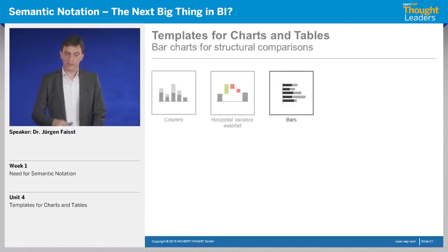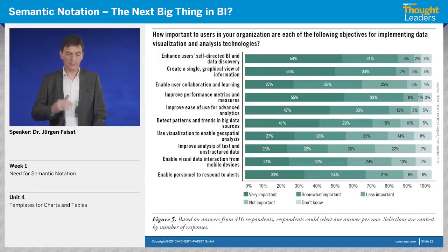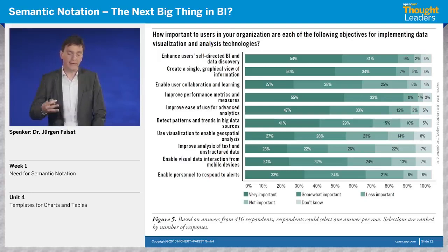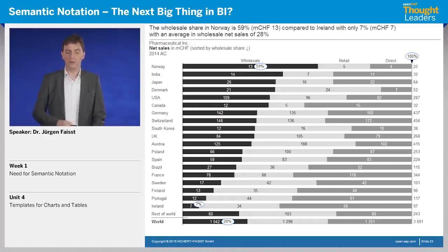Now let's look at bar charts. Let's take a bar chart from any source — here it's an analyst bar chart. The question is: why is it this greenish color? Again, it's the designer who decided it should look like that. If we apply our semantic notation to such a chart, it would probably look like this — with a clear title, a message, and a consistent look and feel for the bar chart.